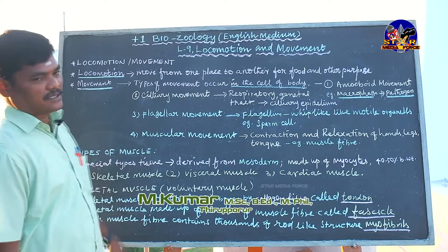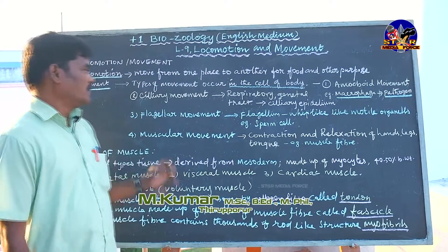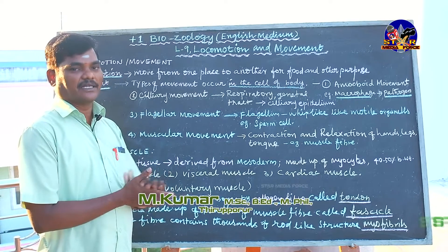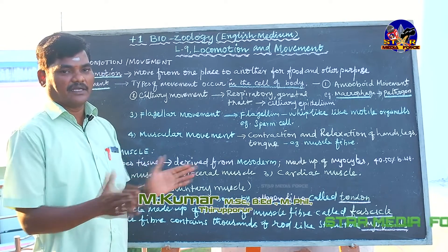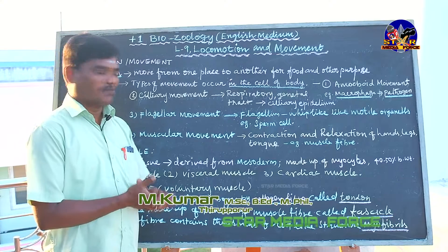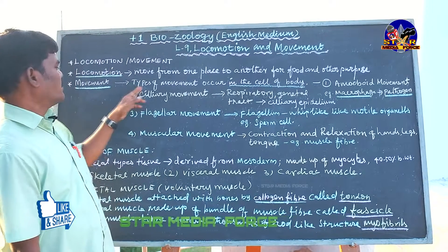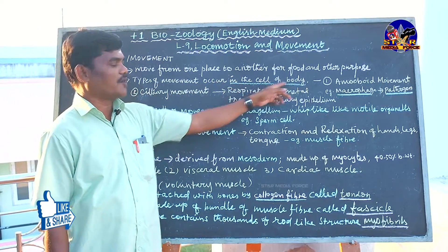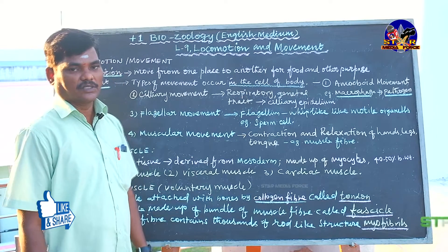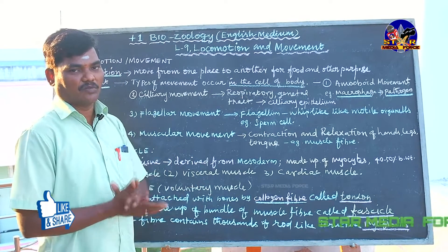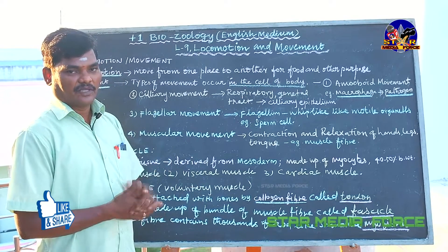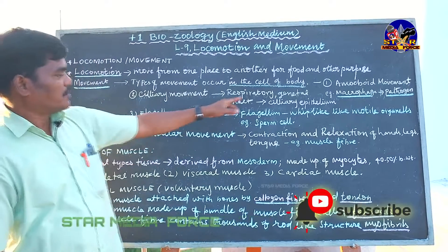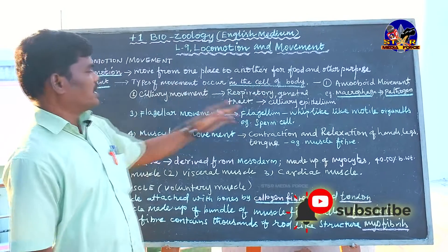Movement means movement of organs over some distance. The type of movement occurs in the cells of the body. At the smallest level, cells have movement, and with the help of this movement, locomotion takes place.